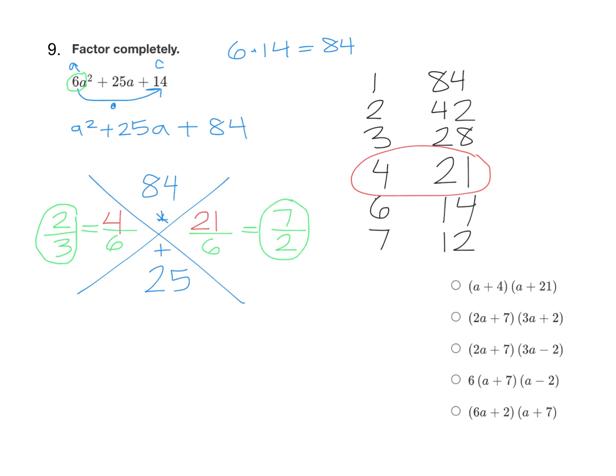And now we're ready to write out our two factors. My variable is a, so I'm going to start with a plus 2 thirds as one of my factors, and then a plus 7 over 2 as the other.